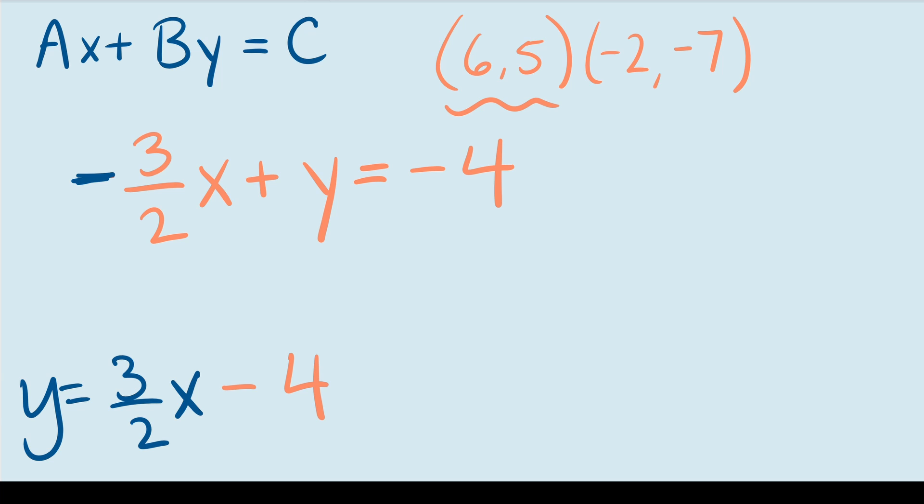Now remember when I told you that A, B and C are all constant integers and A in particular has to be positive. Here, A is both negative and it's a fraction. So we need to do something to cancel out both of those problems. We can multiply both sides by negative 2. That will cancel out the negative and it will get rid of the 2 in the denominator of the fraction.